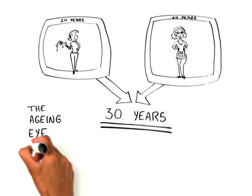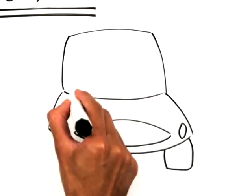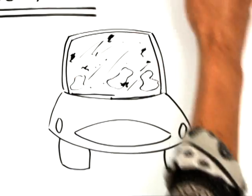There's a number of things that can happen with the aging eye. One of the most common ones is called a cataract. And a cataract is a common way to describe a clouding of the lens. And if that gets clouded, it's almost like looking through a dirty windshield.